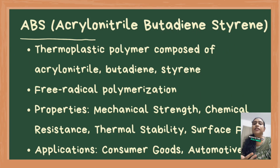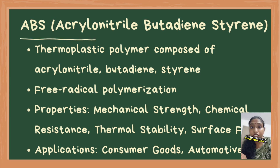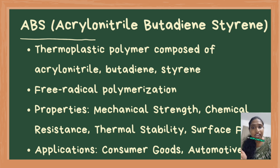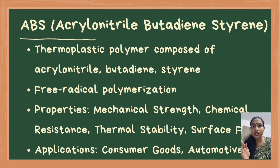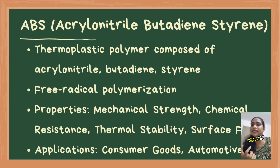Let's see industrial manufacture of polymers. ABS, or acrylonitrile butadiene styrene, is a thermoplastic polymer made through co-polymerization of three monomers: one is acrylonitrile, two is butadiene, and three is styrene. Acrylonitrile provides chemical resistance, butadiene adds impact strength, and styrene contributes rigidity. ABS is produced via free radical polymerization, resulting in a material with excellent mechanical strength, chemical resistance and thermal stability. It is widely used in consumer goods, automotive components and electronic housings.